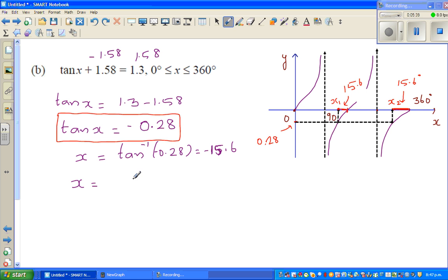So the actual answer would be 360 minus 15.6 degrees. That's one answer, this is your x1. And the other answer, this is your x2, would be 180 minus 15.6, which is 180 degrees minus 15.6 degrees.